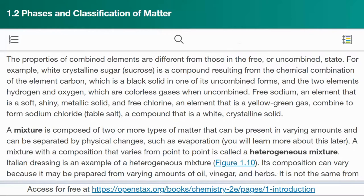The properties of combined elements are different from those in the free or uncombined state. For example, white crystalline sugar (sucrose) is a compound resulting from the chemical combination of the element carbon (which is a black solid in one of its uncombined forms) and the two elements hydrogen and oxygen (which are colorless gases when uncombined). Free sodium, an element that is a soft, shiny metallic solid, and free chlorine, an element that is a yellow-green gas, combine to form sodium chloride (table salt), a compound that is a white crystalline solid.